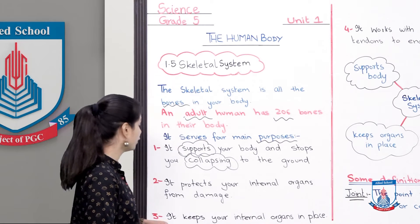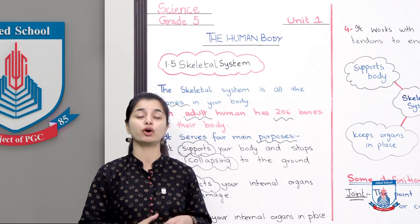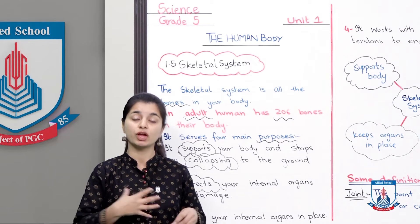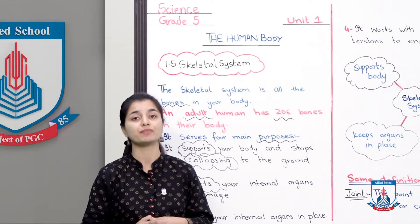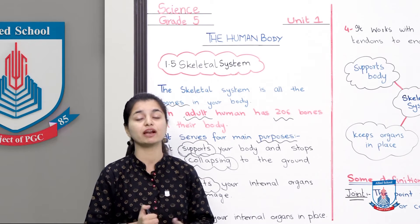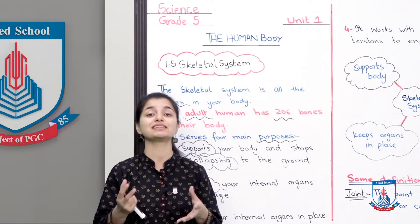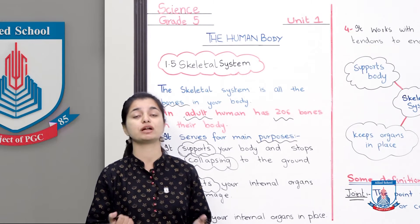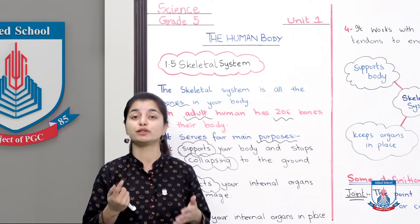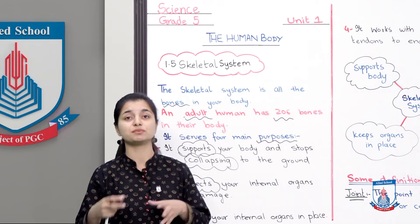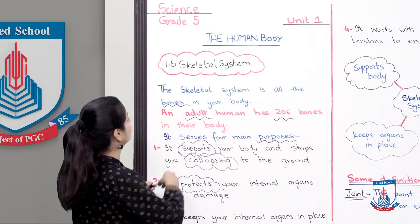The second purpose: it protects your internal organs from damage. In our rib cage, our organs are housed — our heart, lungs, stomach — all are inside the rib cage, which is part of the skeleton. So it protects our heart and lungs. If you fall, you can't damage your heart because it is covered and protected by the skeletal system. Internal organs include the heart, lungs, pancreas, stomach, and intestines — all inside our body — and the skeletal system protects them.